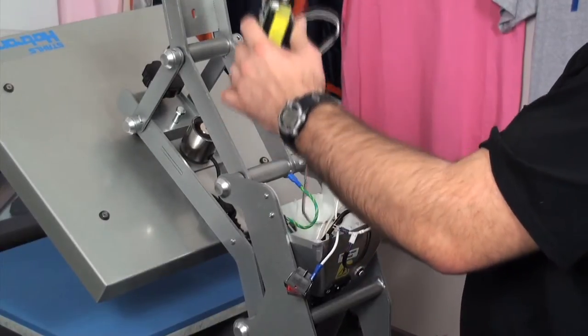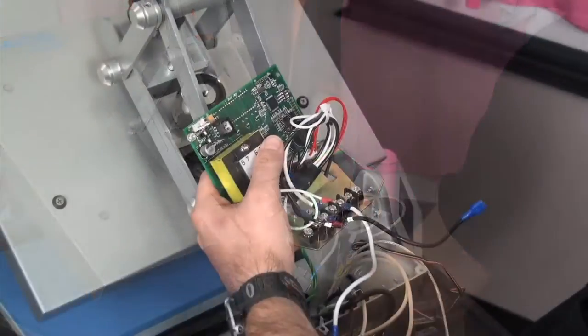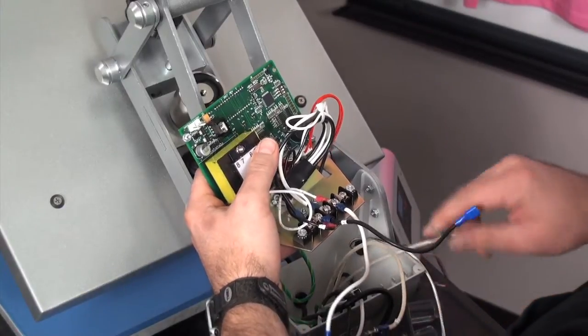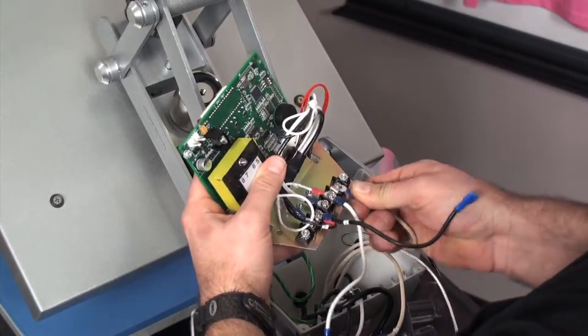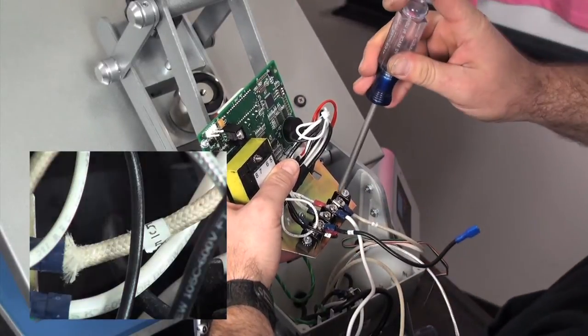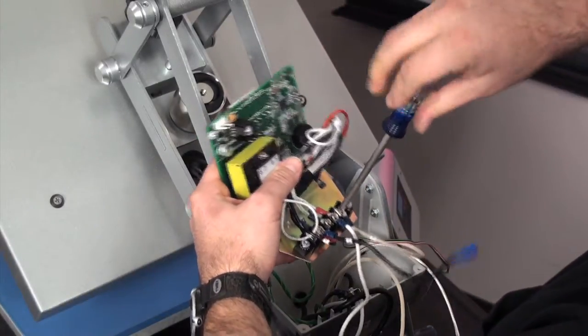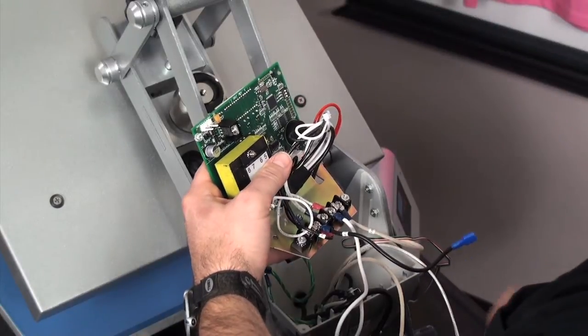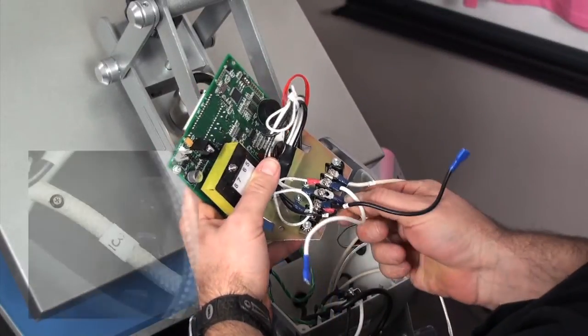On the terminal block unscrew and remove the cloth covered wires from terminals three and five. Now that the old control board assembly is free set it aside and replace it with the new one from Hotronix. We'll reverse the steps for our new control board assembly. Attach the cloth covered wires to terminals three and five on the terminal block. The wires are numbered to ensure that you put the correct wire on the correct terminal.